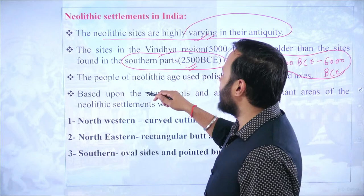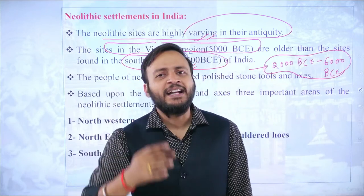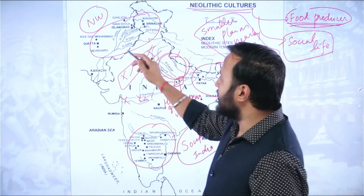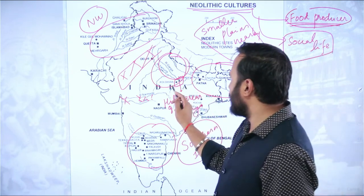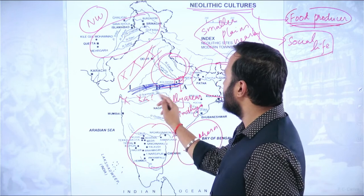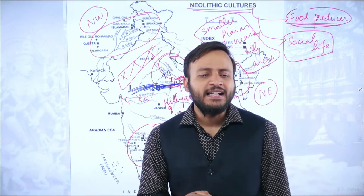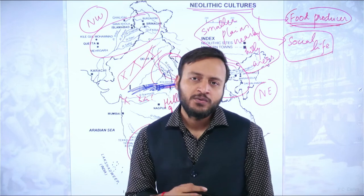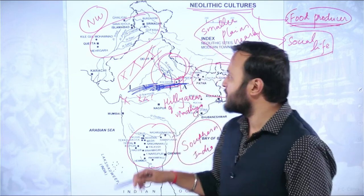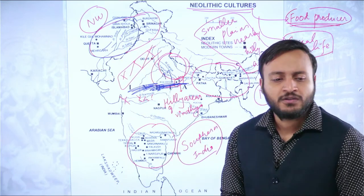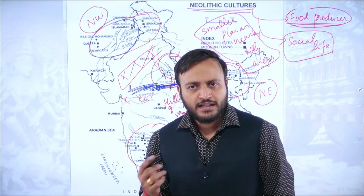If we talk about Neolithic locations in northern India — particularly the northward side of the Vindhya Ranges — those Neolithic sites are older than 5000 BCE. That means at least 7,000-year-old sites are found in northern India, primarily in the northwestern parts of the country.